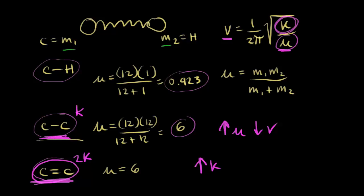Increasing k increases the frequency of vibration because you have a stronger bond. The bottom line: stronger bonds vibrate faster — a stronger bond means increased k and increased frequency. And lighter atoms, like hydrogen, have a smaller reduced mass and therefore vibrate faster than heavier atoms. Stronger bonds vibrate faster, and lighter atoms vibrate faster — these are the two key points about what affects the frequency of vibration: bond strength and reduced mass.